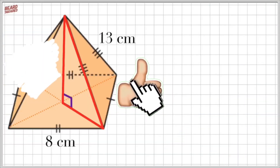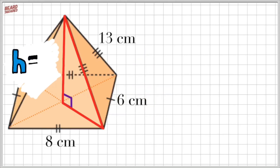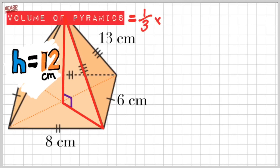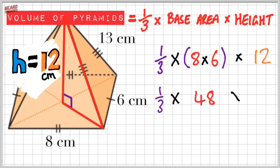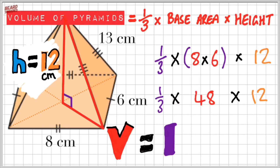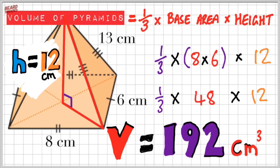Since I have the perpendicular height of 12 centimeters, I can now go ahead and use the formula for finding out the volume of the pyramid. That's going to be a third times the base area times the height. Very simply, I substitute the values: the base is 8 by 6, so that's 8 by 6 here, and the height is 12. That gives me a third times 48 times 12, so the total volume is 192 centimeters cubed.